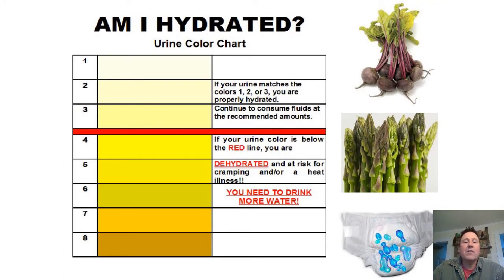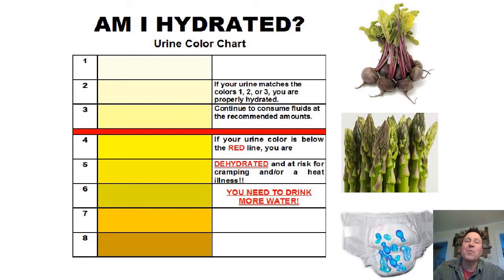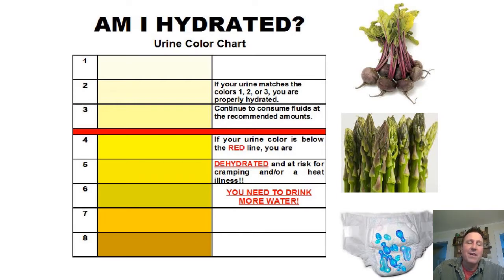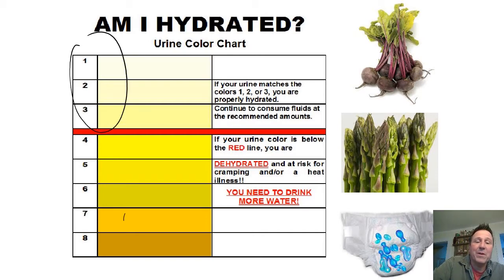Your urine color varies with hydration. First thing in the morning your urine is darker because you haven't drunk anything for eight hours or however long you've been sleeping — it's concentrated. It becomes more watery as you drink during the day. A lot of America is chronically dehydrated. You want to have light-colored urine. You don't want it to be dark.